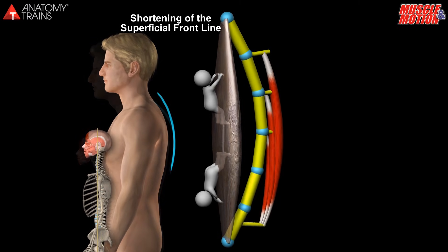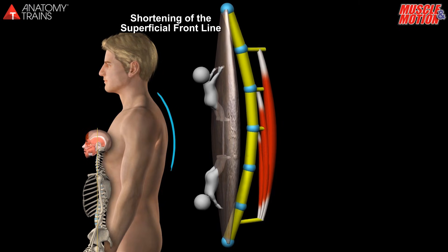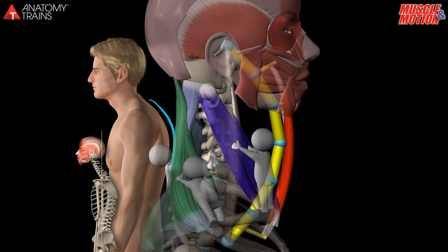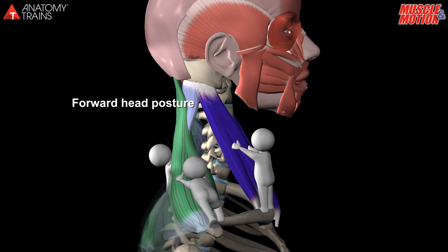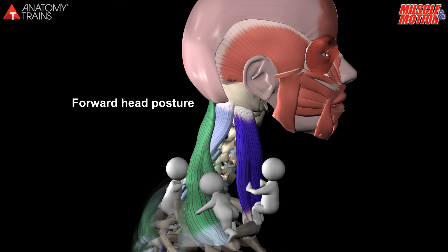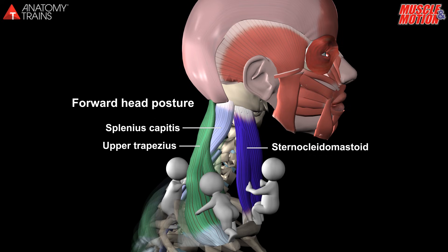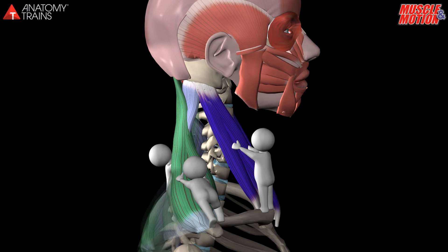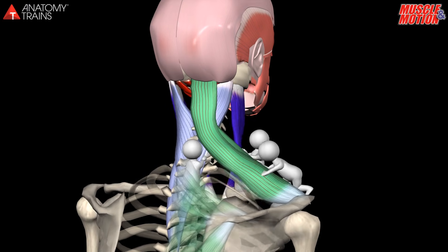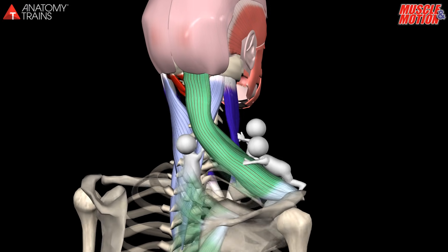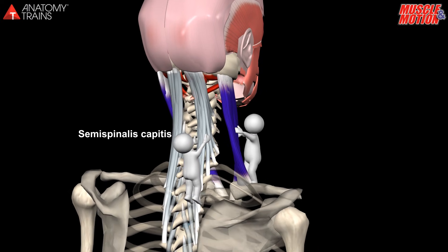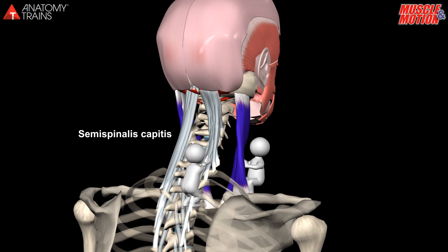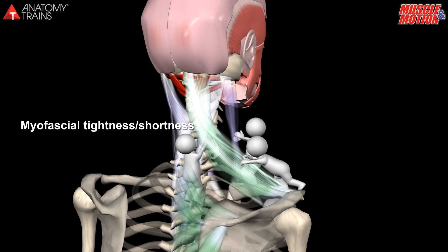Another example is forward head posture. In this head position, the neck muscles presented in this video have been tight for a long time. The myofascia that enwraps these muscles is tight. With time, it loosens its elasticity and increases in stiffness. Myofascial tightness and shortness.